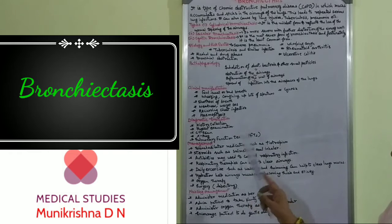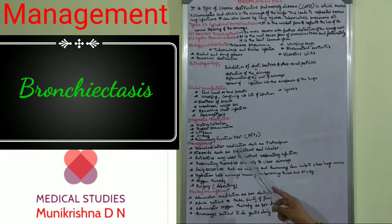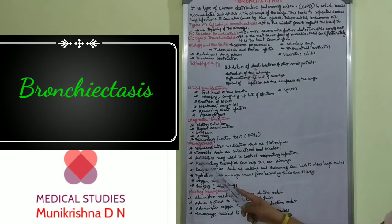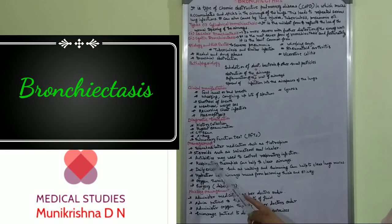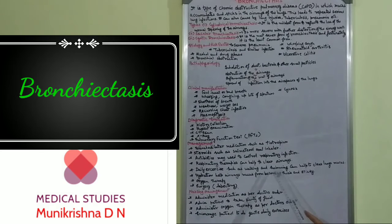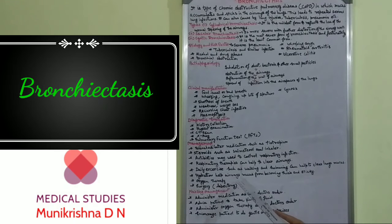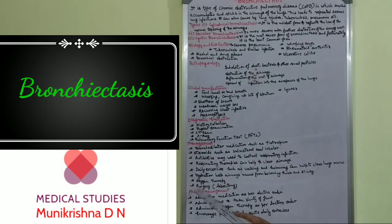Now we will move on to management. Bronchodilators, medications such as tiotropium. Steroids such as salmeterol, oral inhalers. Antibiotics may be used to control respiratory infection. Respiratory therapies can help to clear airways. Daily exercise such as walking and swimming can help to clear lung mucus. Hydration will help prevent airway mucus from becoming thick and sticky. Oxygen therapy should be started. After medication, if no cure, then surgery such as lobectomy should be done, in which the damaged lobes will be removed.